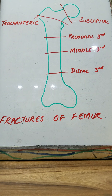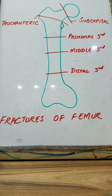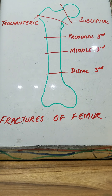After subcapital fractures, we move on to trochanteric fractures. These fractures usually occur in young or middle-aged individuals and result from direct trauma. The fracture line is intracapsular in subcapital fractures, but in trochanteric fractures the fracture line is extracapsular. As a result, both the proximal and distal fragments have a profuse blood supply. This type of fracture is therefore not usually associated with avascular necrosis of the head of the femur, although there is still shortening and lateral rotation of the leg.